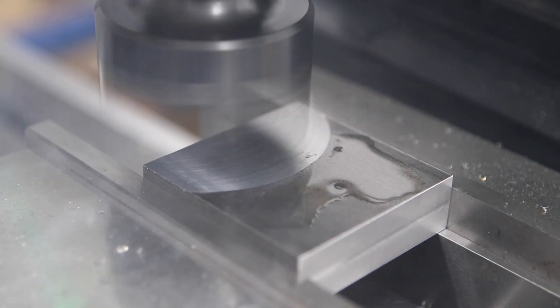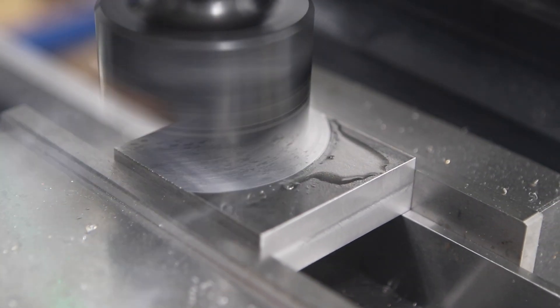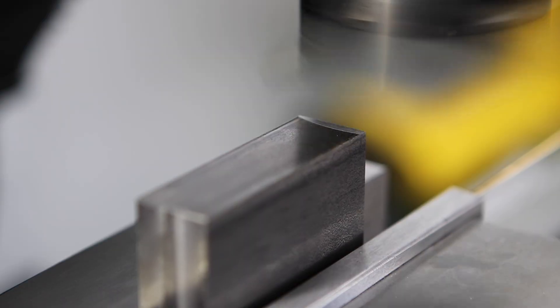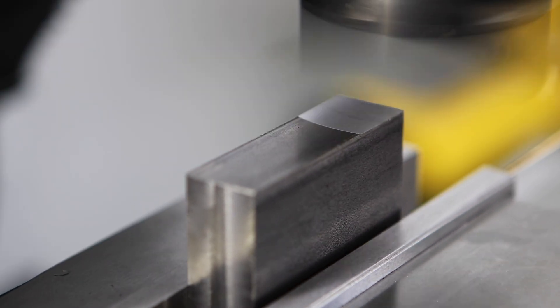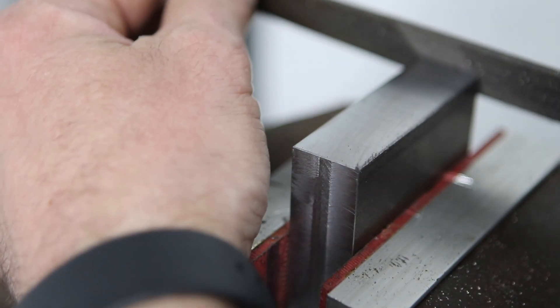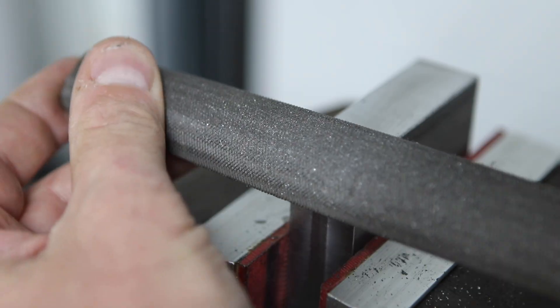Now you could use an end mill for this, you could even draw file it in the vise if you wanted to, but I find that in these kind of situations with large flat stock a fly cutter works really well and leaves a nice surface finish. Between each of the operations I'm just cleaning up the edges with a file just to make sure that I remove any burrs and keep things nice and square in the vise.